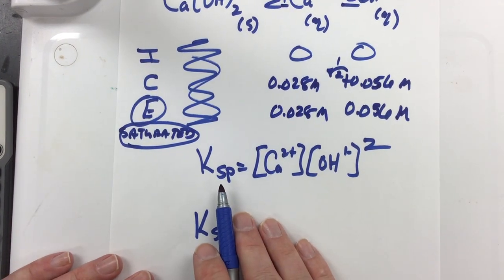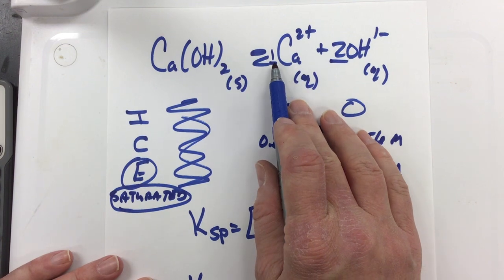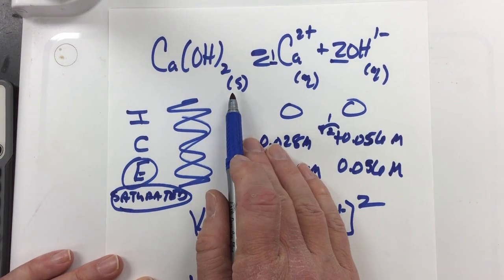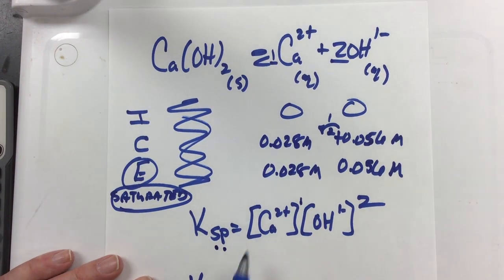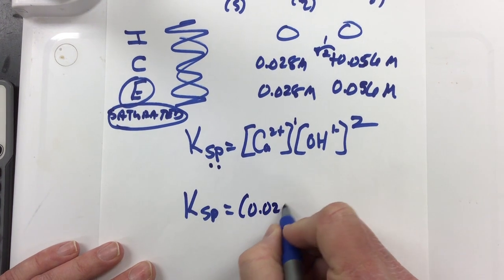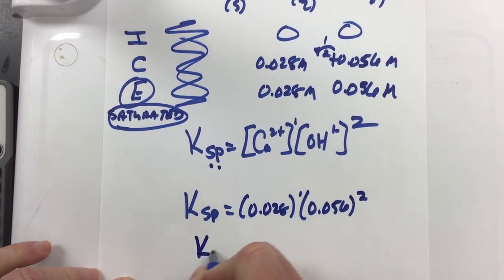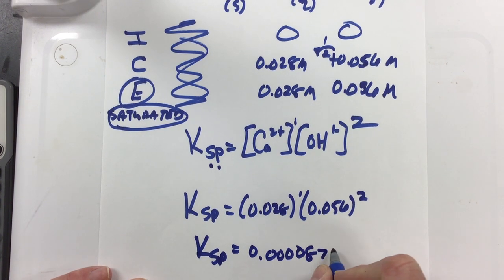Now knowing that our KSP equation is products over reactants raised to their powers, ignoring solids, liquids, and solvents, then I'm going to get the calcium with a one in front of it. So that's raised to the first power. I'm going to have the hydroxide raised to the second power. And I'm going to ignore the calcium hydroxide because it's a solid, which again is why it's the KSP, the solubility product constant, because we don't care about the reactants in this case. So I'm going to take my numbers and I'm going to plug them in, and I'm going to get 0.028 to the first times 0.056 to the second. Which means then my KSP value for this is 0.056 times 0.056 times 0.028.